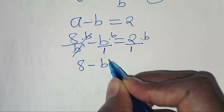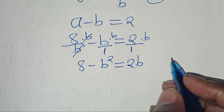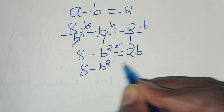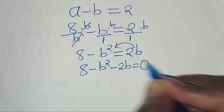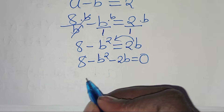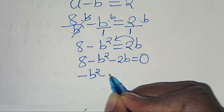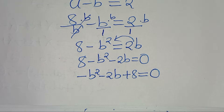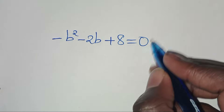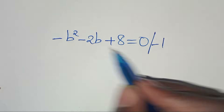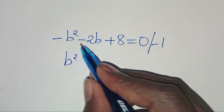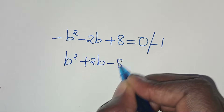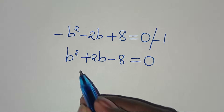Multiplying everything by b gives us 8 minus b squared equals 2b. Rearranging, we have minus b squared minus 2b plus 8 equals 0. Dividing both sides by minus 1 gives us b squared plus 2b minus 8 equals 0, which is a quadratic equation.